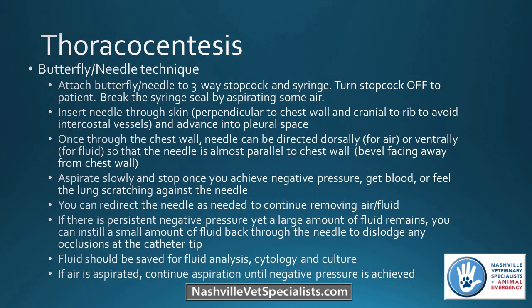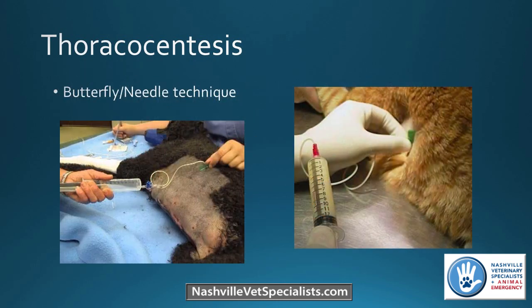Once you get your fluid sample, save some for fluid analysis, cytology, or culture. If you're getting air, continue aspiration until you get negative pressure. Here are pictures of the butterfly technique — one dog in lateral recumbency getting air off, and another getting fluid off. That technique is usually for cats or small dogs.